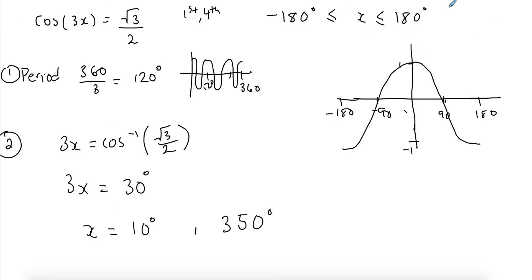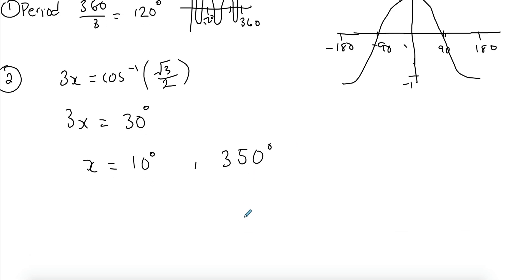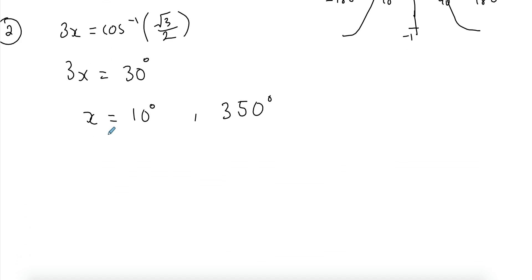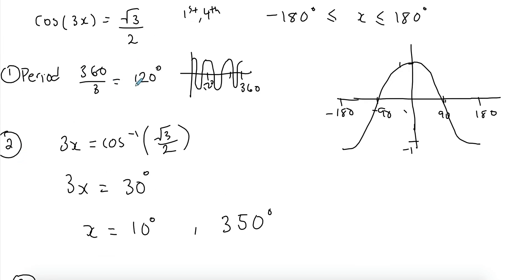But these are the solutions from 0 to 360. My domain is from negative 180 to 180. Now this is where these functions are a bit different. Now whether you have this three in there or not, the steps are always the same.